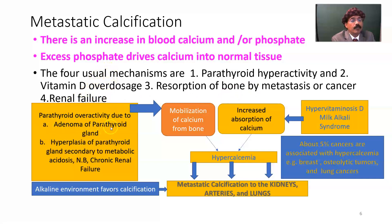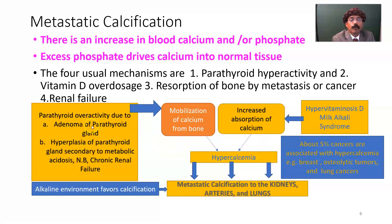Parathyroid overactivity may be due to adenoma of the parathyroid gland — a benign tumor — or hyperplasia of the parathyroid gland secondary to metabolic acidosis associated with chronic renal failure, causing mobilization of calcium from bone and increased absorption of calcium from the intestine. In hypervitaminosis D and milk-alkali syndrome — where a person takes antacids and milk — calcium absorption increases, leading to hypercalcemia. Calcium may be deposited in the kidney, arteries, lungs, and stomach.